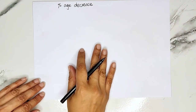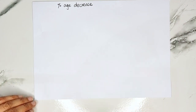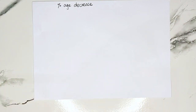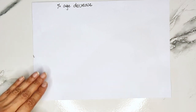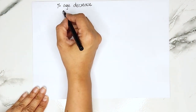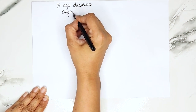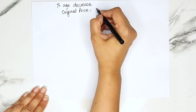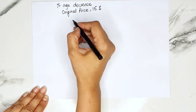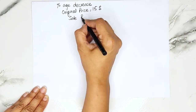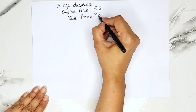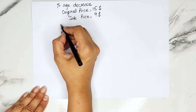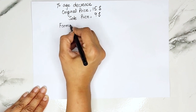Hello everyone, I hope you all are doing well. In today's video we will be discussing how to calculate the percentage decrease using two methods: the formula method and the multiplier method. Let's start. Let's suppose we have an item — the original price of that item is $15 and the sale price is $9.